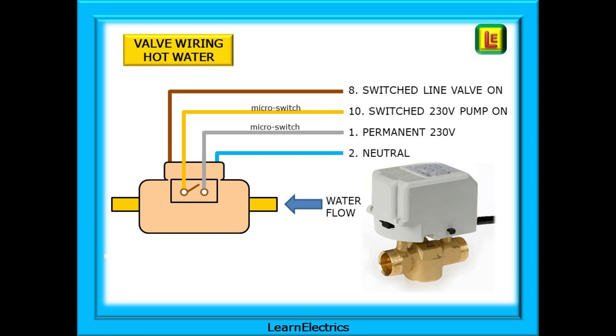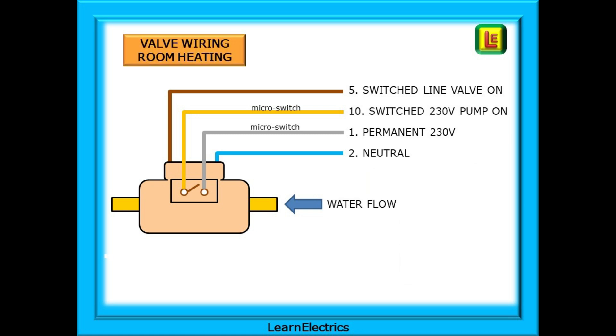You can check these against the terminal numbers that you have and confirm that the drawing matches the wiring that is in front of you because the valve wiring will not be changed. The water valve here has the brown wire connected to terminal number 8 and the valve for the room heating uses terminal number 5 for the brown wire. The other three wires use the same terminal numbers for both valves.